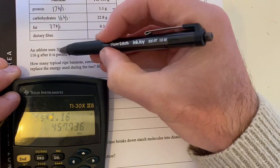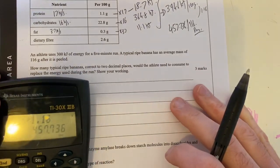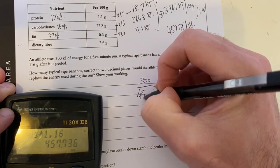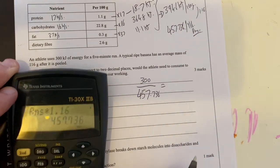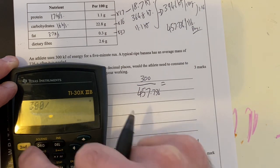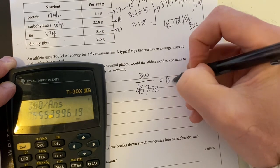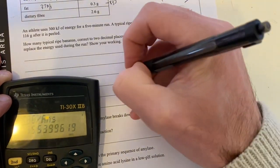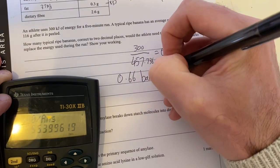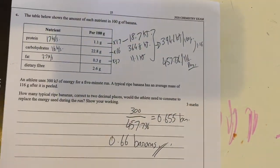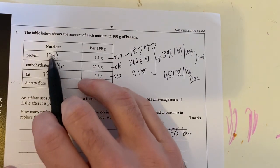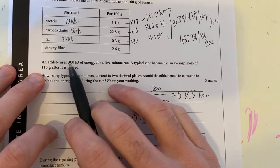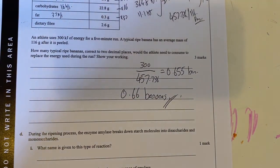If I take my 300 and divide it by how much energy a banana will give me, I'll get my answer. My bananas will be 300 divided by 457.736, which equals 0.655 bananas. I need to round it to two decimal places: 0.66 bananas. That should be my answer. Key thing here is remembering that your data booklet has the energy content, which gives energy per 100 grams. Scaling it up to how much energy per banana, then dividing my energy by how much energy in each banana gives me this answer.